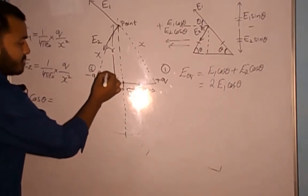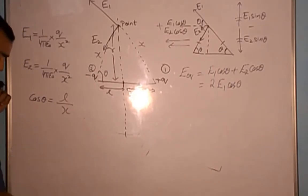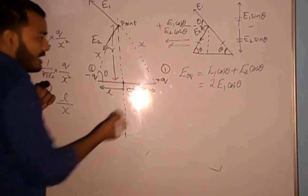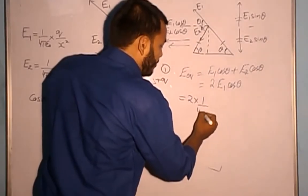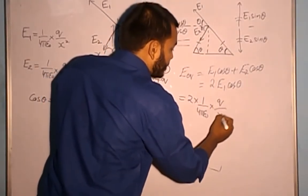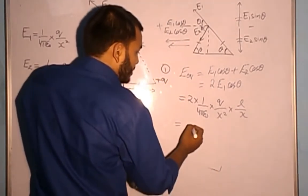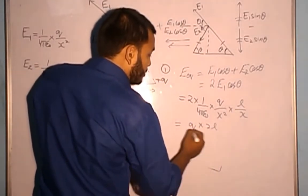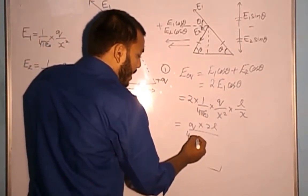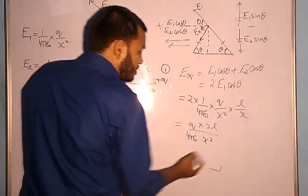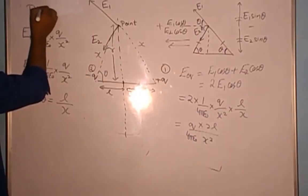Now let's find cos theta. In the right triangle, cos theta equals the base L divided by the hypotenuse x. Substituting, the net field becomes 2 × (1/4πε₀) × (q / x²) × (L / x), which gives (q × 2L) / (4πε₀ × x³). I rearrange the terms to get q × 2L in the numerator.